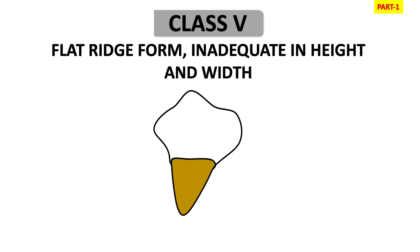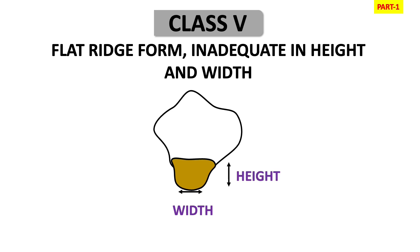In Class 5, the ridge is flat — inadequate in both height and width. As you can see in the figure, there is extensive loss of height which results in a broad and flat base, and there is also loss in width. This ridge anatomy will definitely create a problem in fabrication of denture. It is very difficult to fabricate a denture in such ridges.